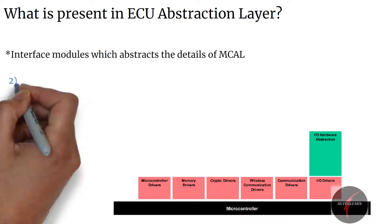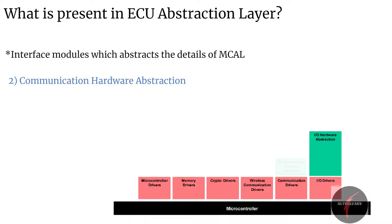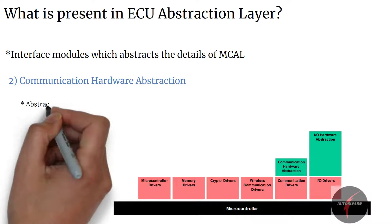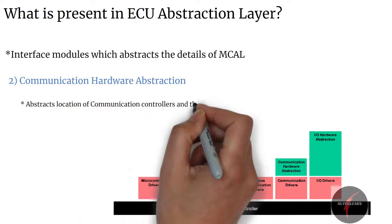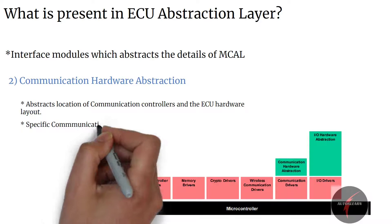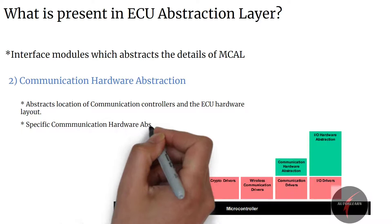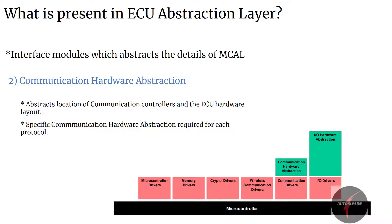Next, we have communication hardware abstraction. The communication hardware abstraction is a group of modules that abstracts the upper layers from the location of communication controllers and the ECU hardware layout. For all communication systems, a specific communication hardware abstraction is required, be it LIN, CAN, FlexRay, or any other protocol.